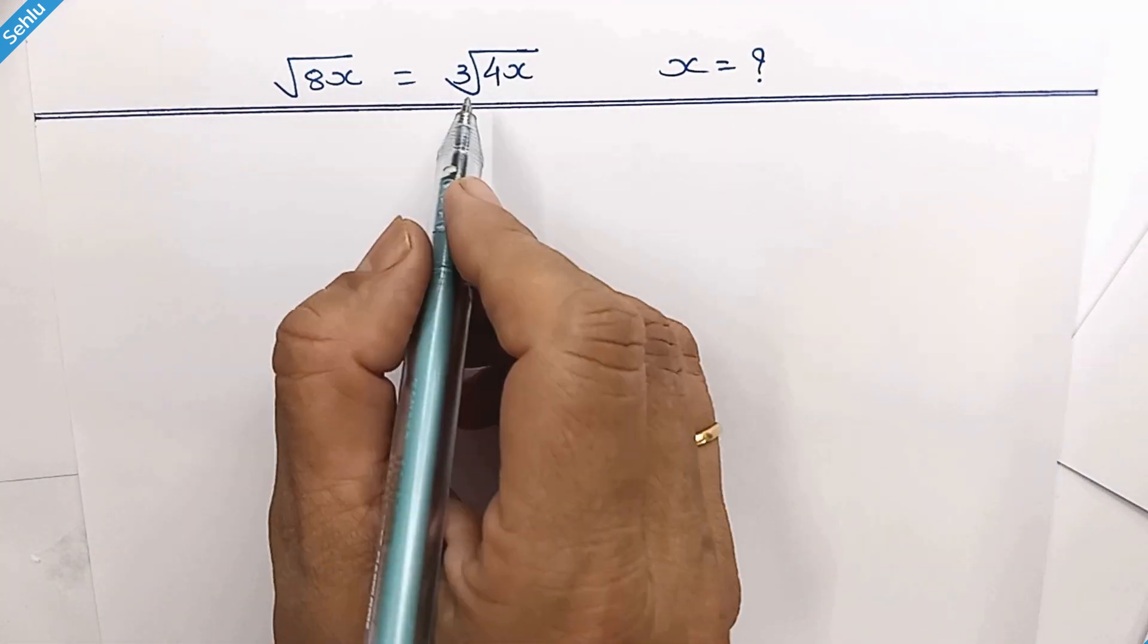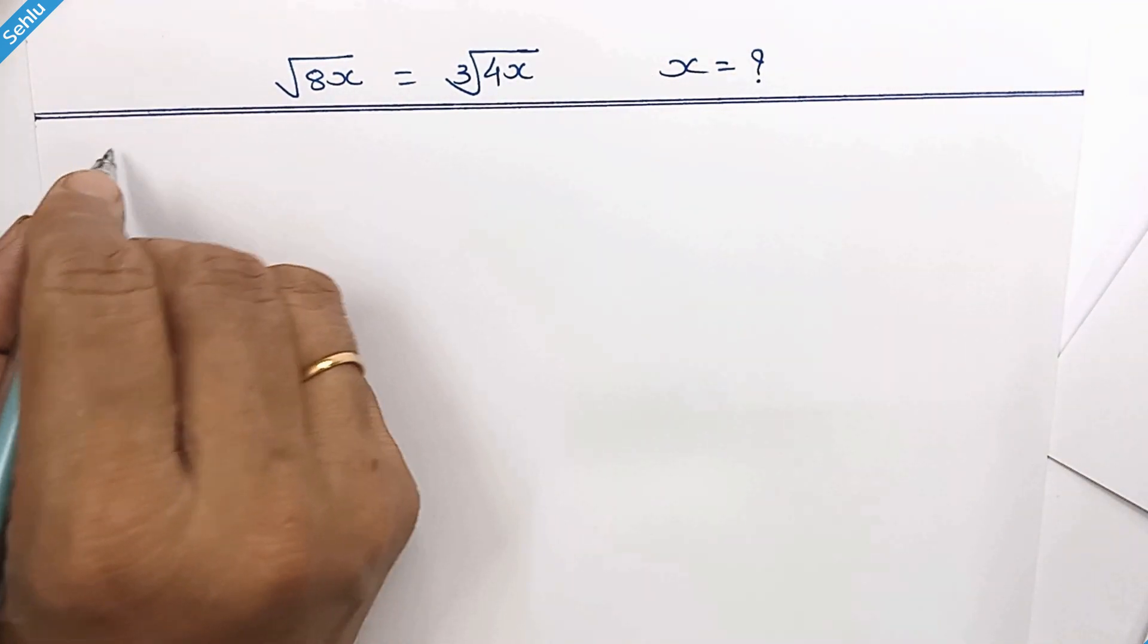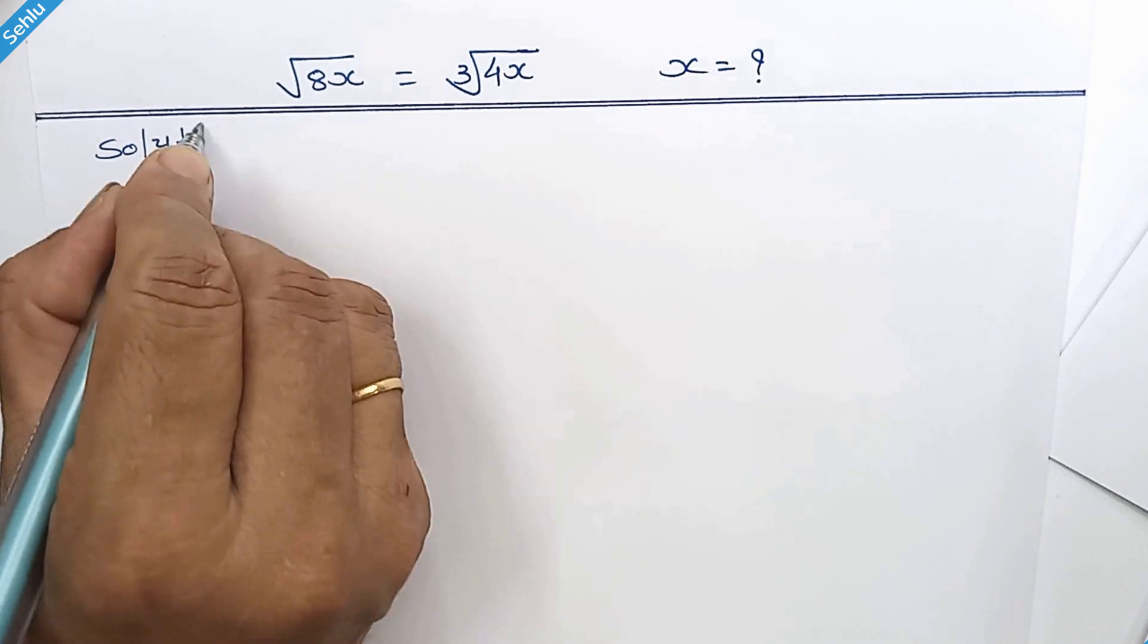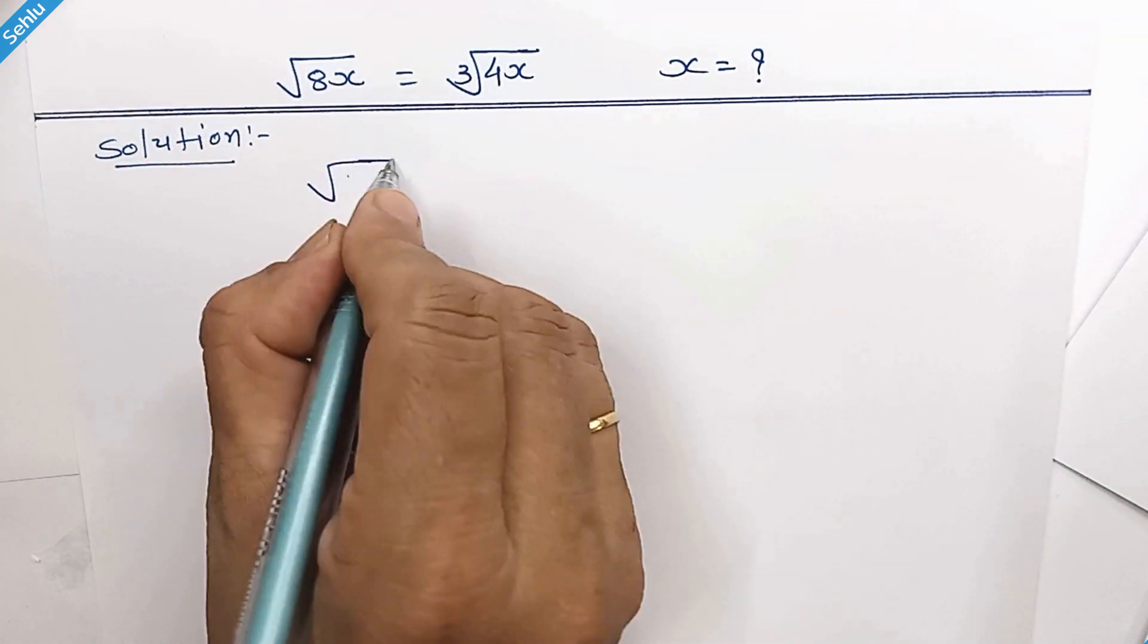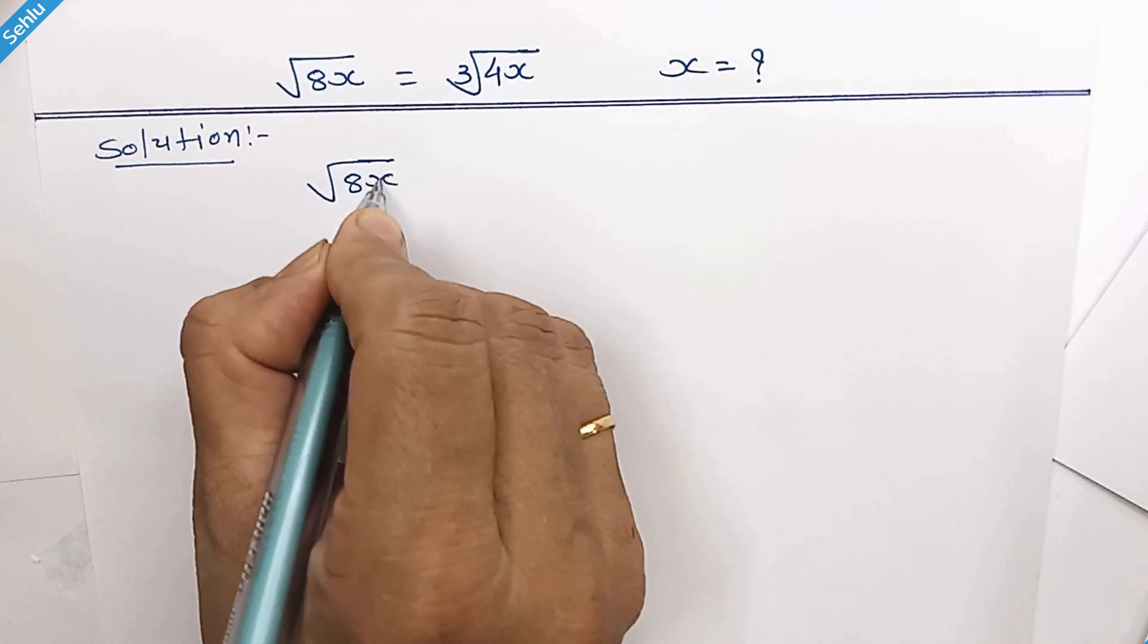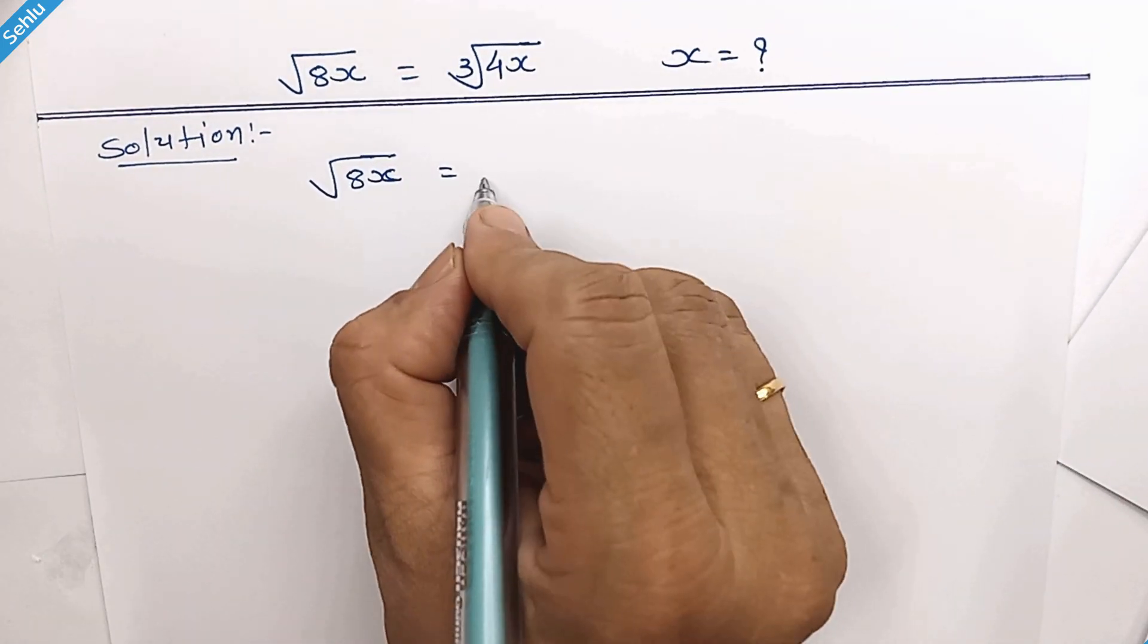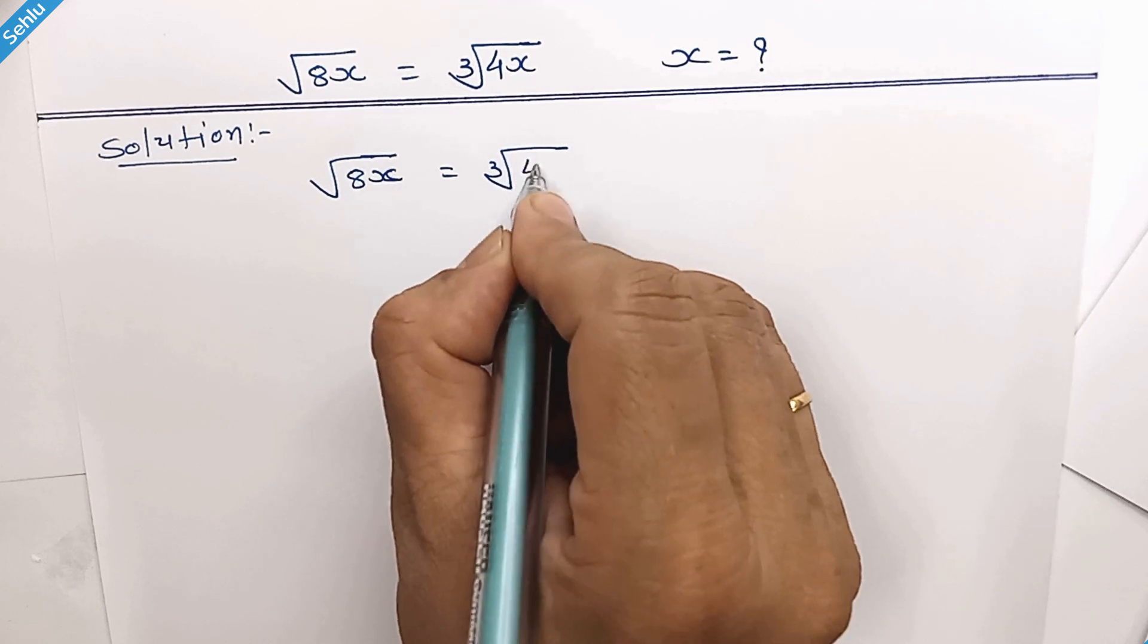Hello friends, a nice math problem. Let's solve this. Question is square root of 8x is equal to cube root of 4x.